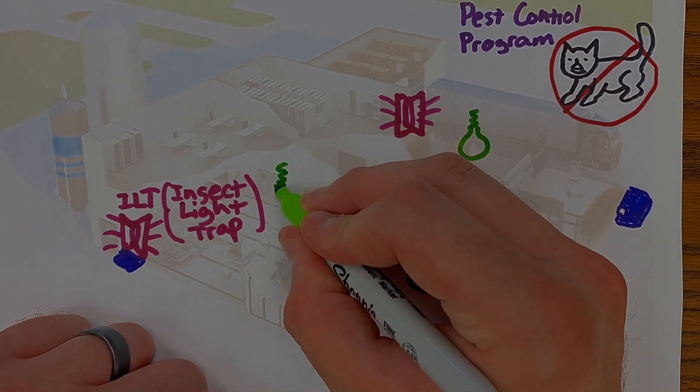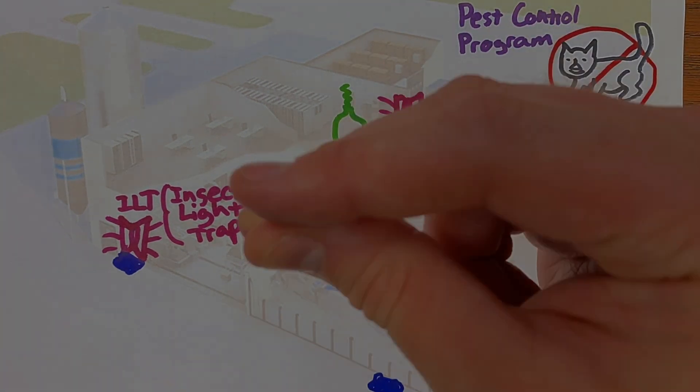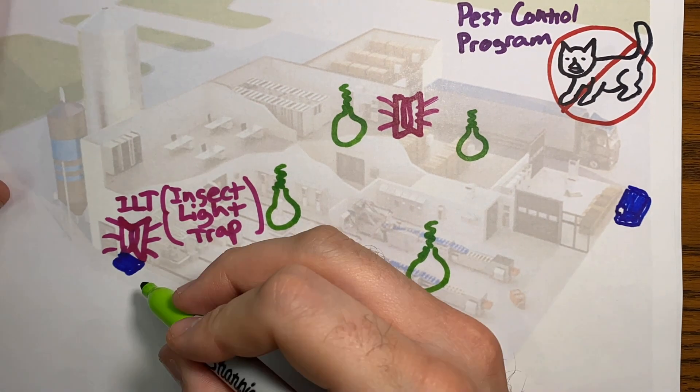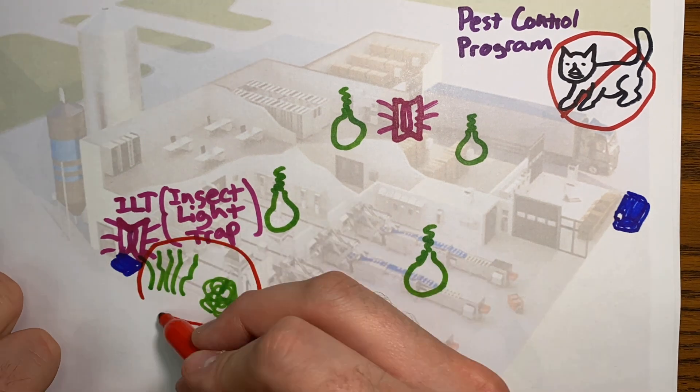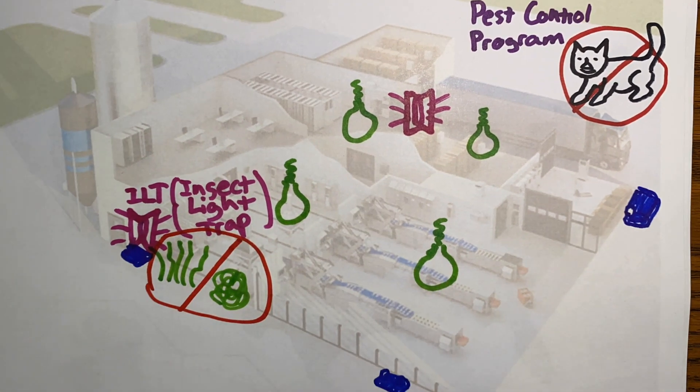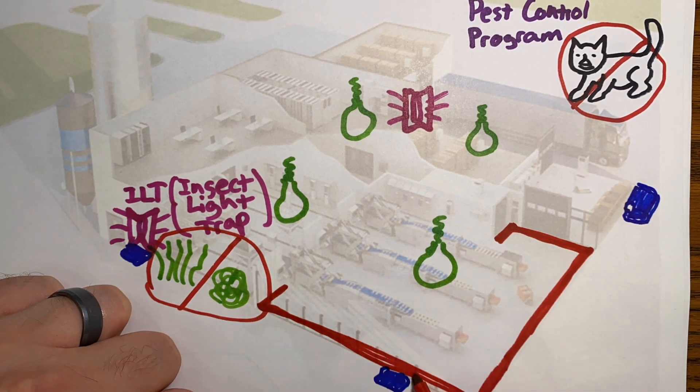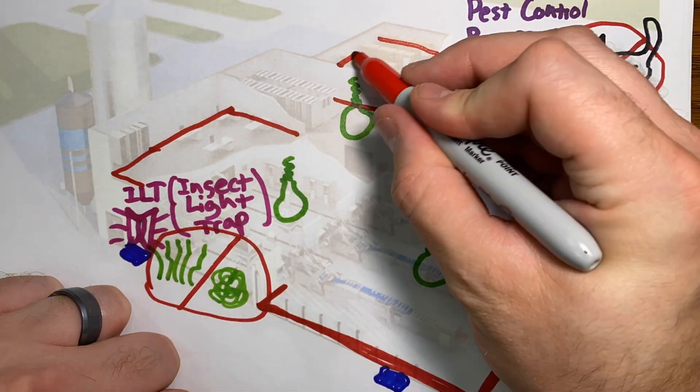Lighting helps with inspecting. Many states even have lighting requirements in their code. It's necessary to keep down any overgrowth so you're not harboring pests right outside your facility. For storage, there needs to be rodent runways so you can properly inspect those areas. It's a predictable path where you might be able to see rodent activity and then take action.